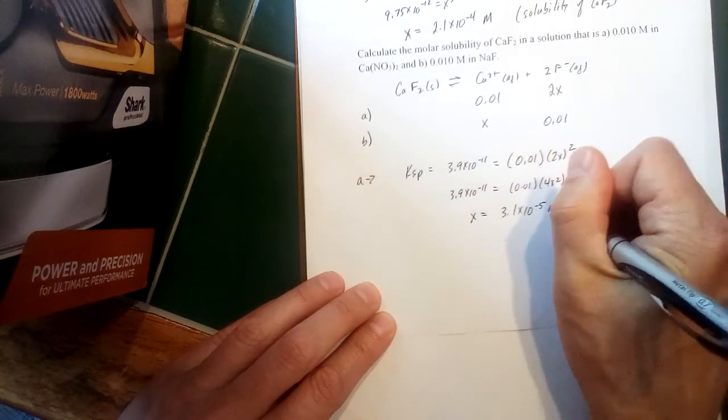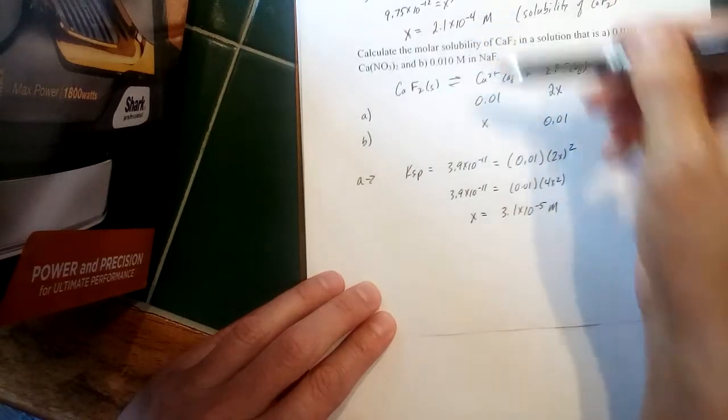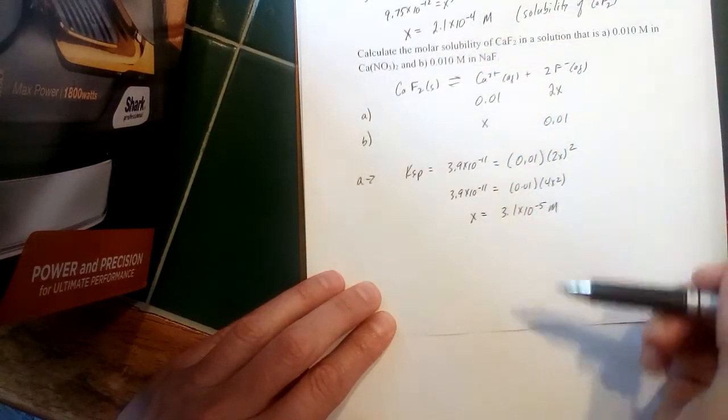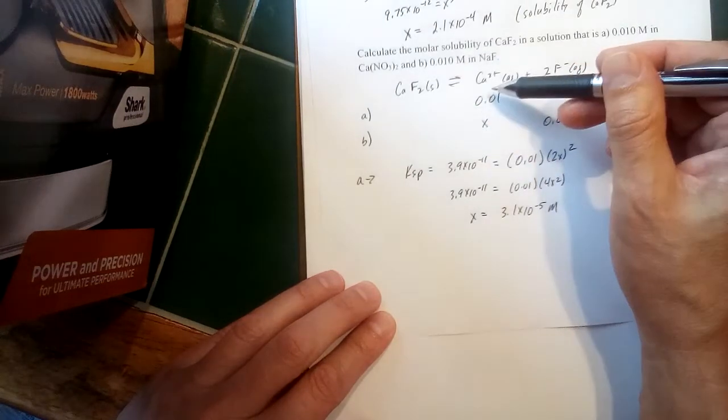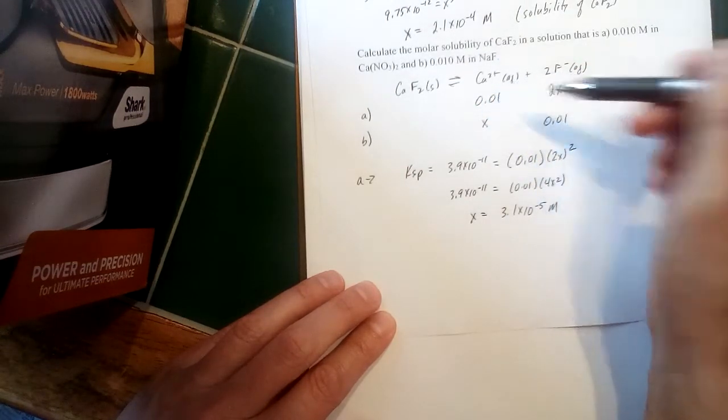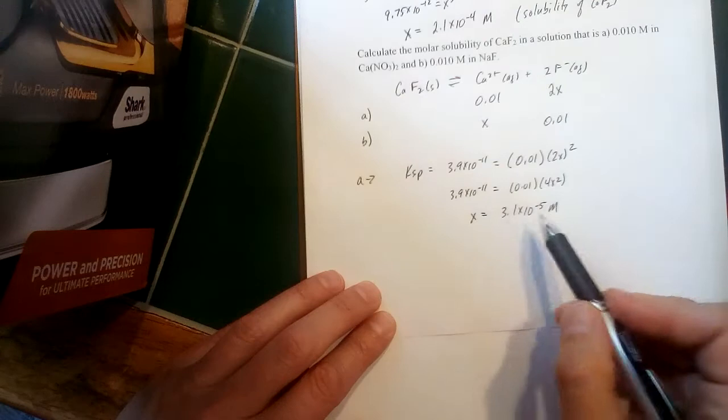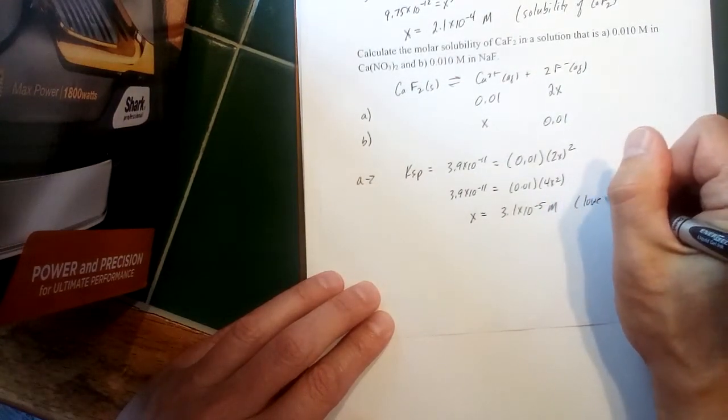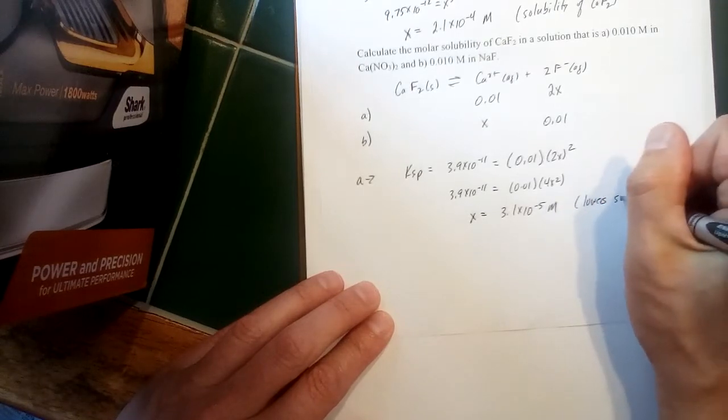Now notice that's a lower number—10 to the minus fifth versus 10 to the minus fourth. So having some of the product calcium in there has shifted the equilibrium back toward the solid—not as much of the solid dissociates, so lower solubility.